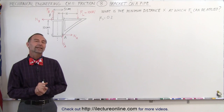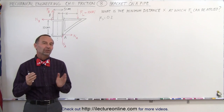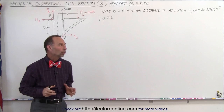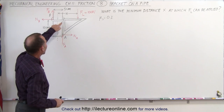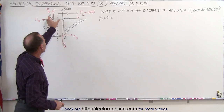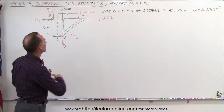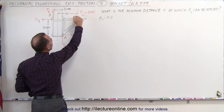Welcome to ElectronLine. Our next example on friction has to do with a bracket on a pole. We have the bracket here that has two rings. They're attached to the bracket and we're trying to put a load on the bracket.